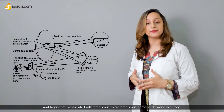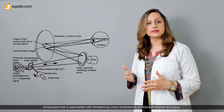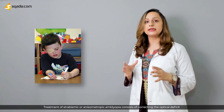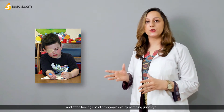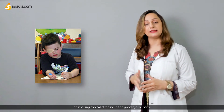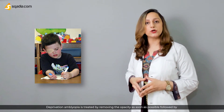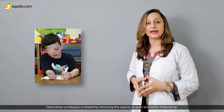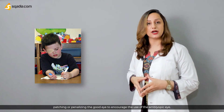Binocular retinal birefringence scanning can identify, even in very young children, amblyopia associated with strabismus, microstrabismus, or reduced fixation accuracy. Treatment of strabismic or anisometropic amblyopia consists of correcting the optical deficit and often forcing use of the amblyopic eye by patching the good eye, instilling topical atropine in the good eye, or both. Deprivation amblyopia is treated by removing the opacity as soon as possible, followed by patching or penalizing the good eye to encourage use of the amblyopic eye.